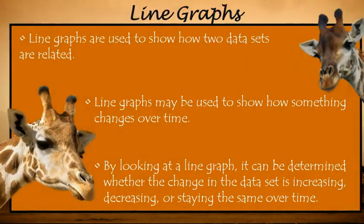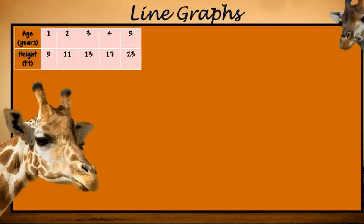Line graphs are used to show how two data sets are related. Line graphs may be used to show how something changes over time. And by looking at line graphs, it can be determined whether the change in the data set is increasing, decreasing, or staying the same over a period of time. Let's look at how to put a line graph together.